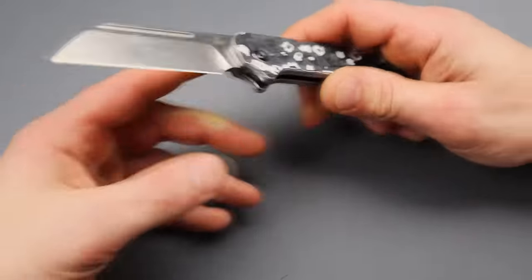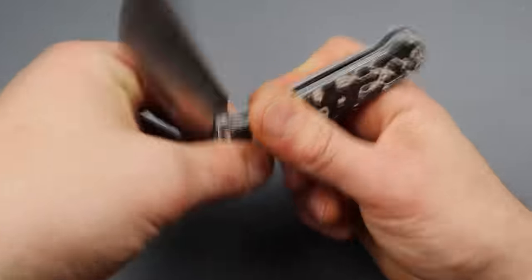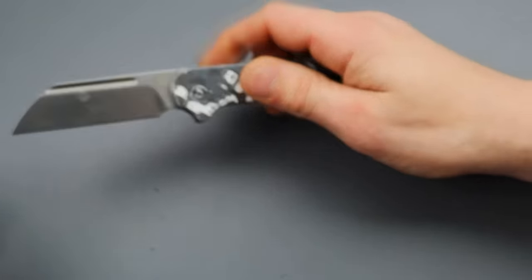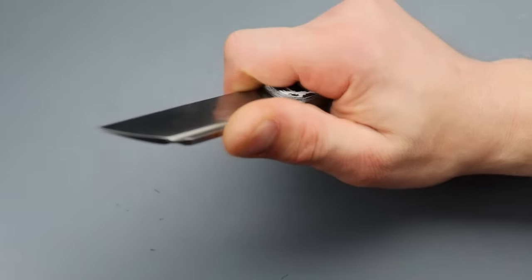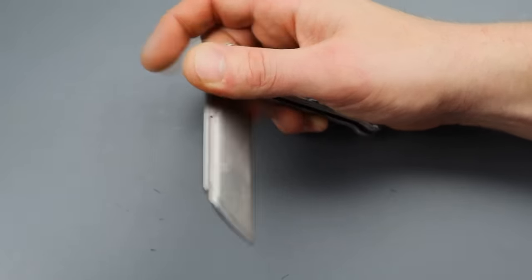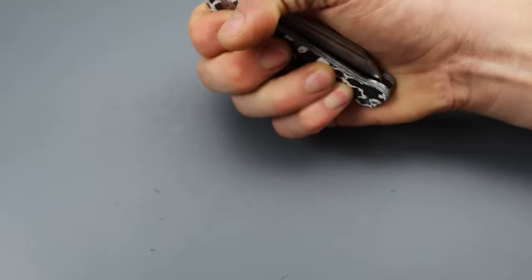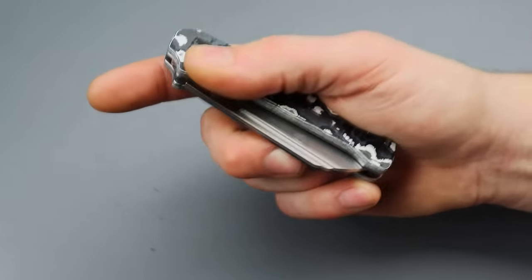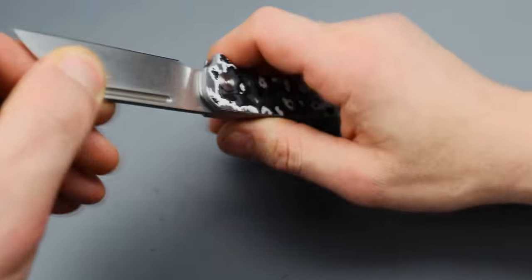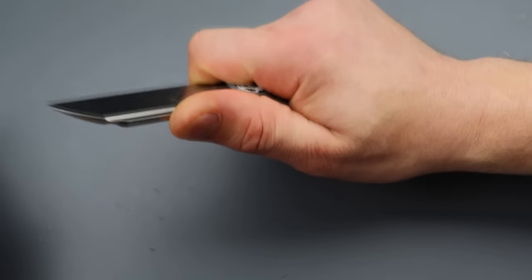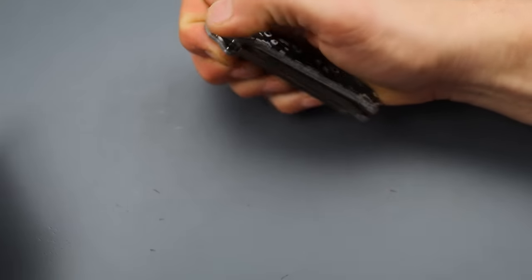So, first off, we have the QSP Penguin Slip Joint. Man, I think that this type of slip joint, the penguin body or penguin shape just works so well for this. This would be a great reverse flicking knife if they did this exact version in a locking version, too. But as far as for a, you know, a slip joint, it's got great walk and talk.